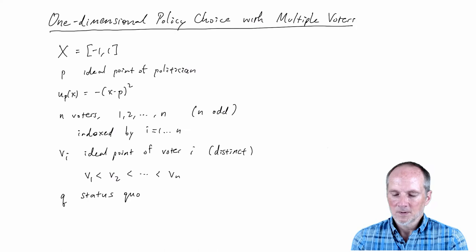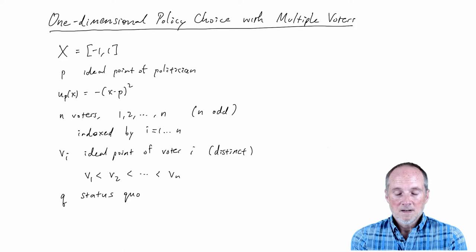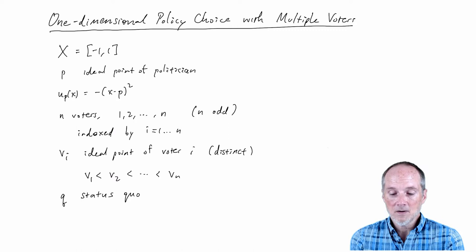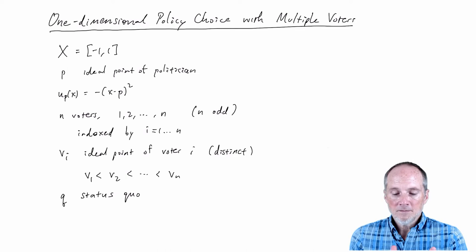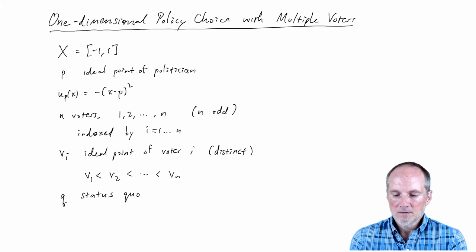Let's assume — and you can get all of this from deeper game-theoretic analysis — that each voter votes for the policy proposal if it's closer to their ideal point than the status quo. If the proposal is further than the status quo, they reject it. If a voter is indifferent — the proposal and status quo are the same distance from them — let's just assume the voter accepts the proposal.